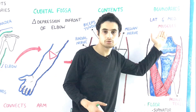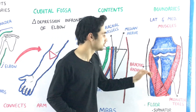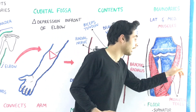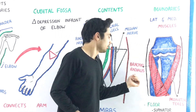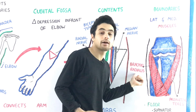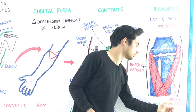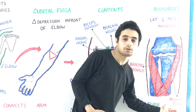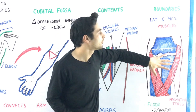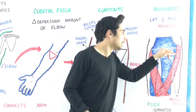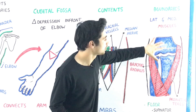The boundaries of the cubital fossa consist of muscles and bones. On the lateral side we have the brachioradialis muscle, and on the medial side we have the pronator teres muscle. The base of the cubital fossa is formed by a line joining the two epicondyles of the humerus.